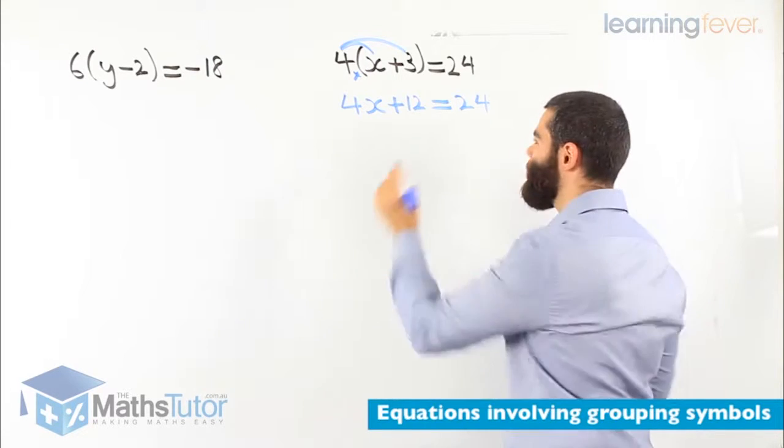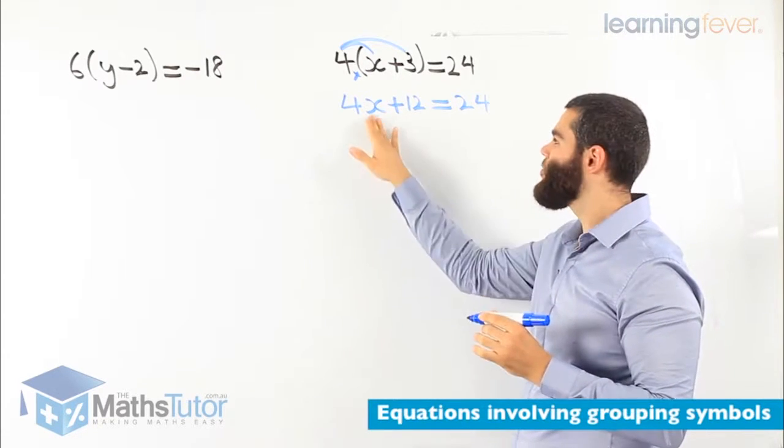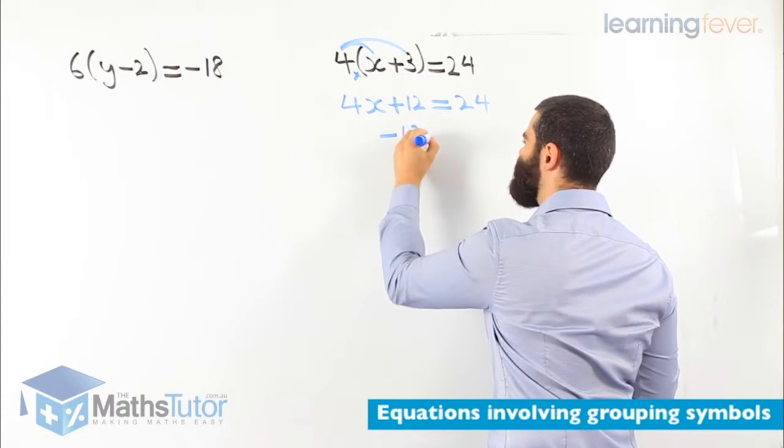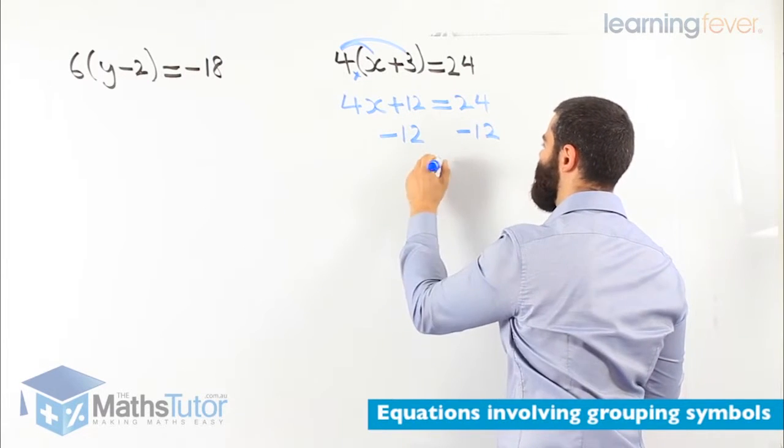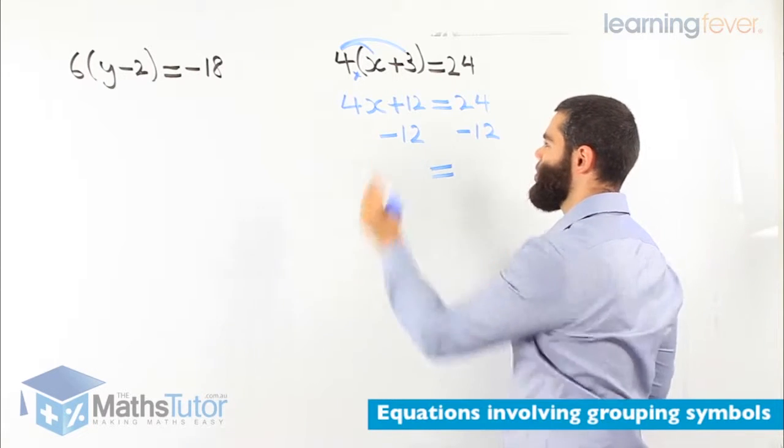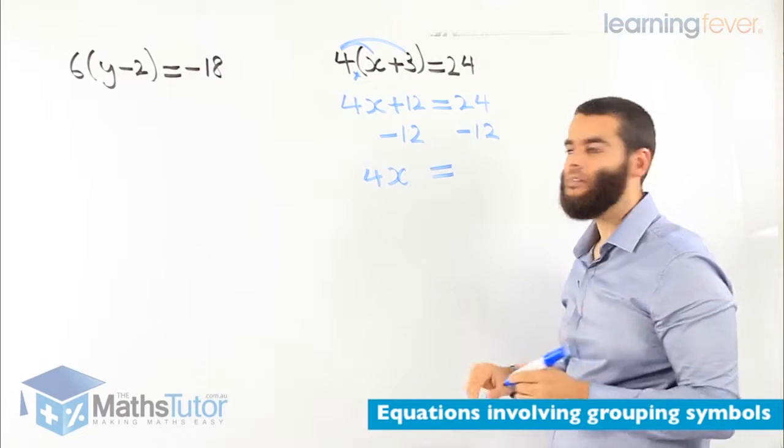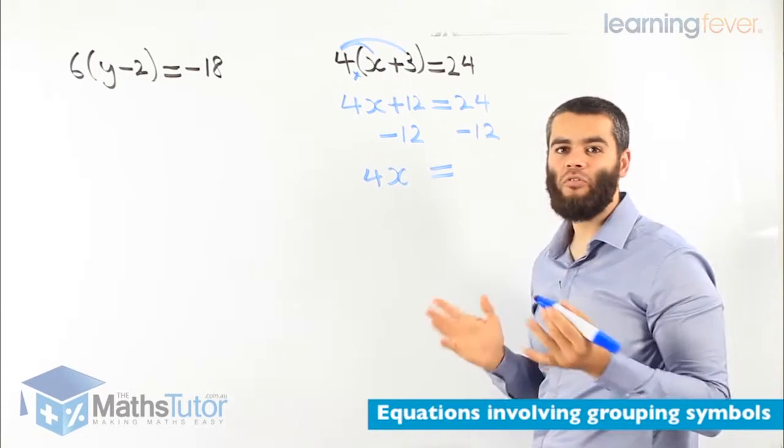Which one do we get rid of first? We start with the furthest one away from x. It's the 12. Minus 12 on one side, minus 12 on the other side. 4x is left, because 12 take away 12 is gone. 24 take away 12 is 12.